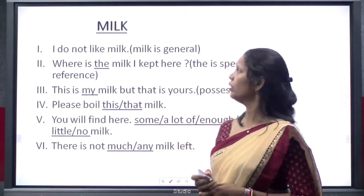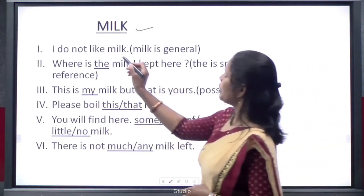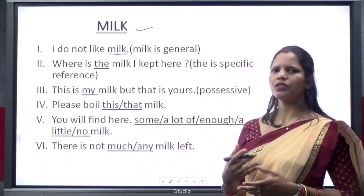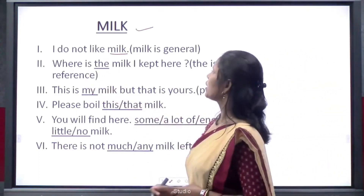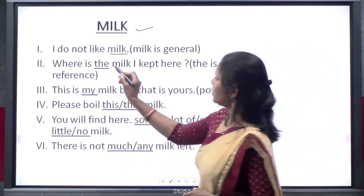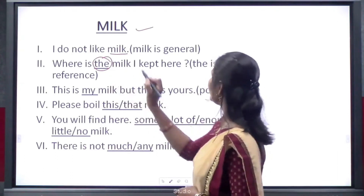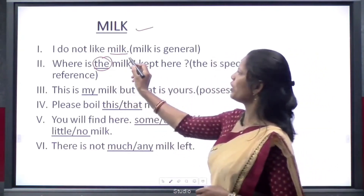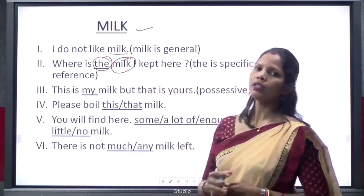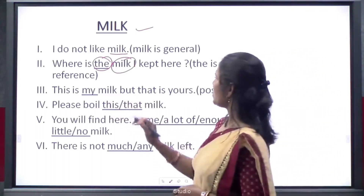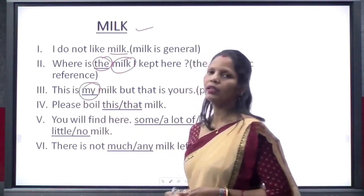In 'I do not like milk', milk is uncountable and used in a general sense. In 'Where is the milk I kept here?', 'the' is used before the uncountable noun milk, giving it a specific reference. In 'This is my milk but that is yours', the possessive 'my' is used before the uncountable noun.